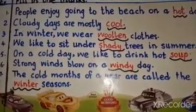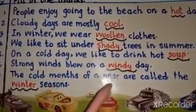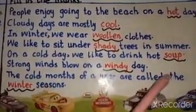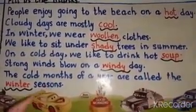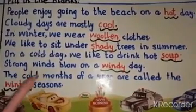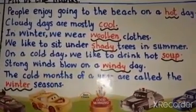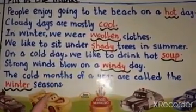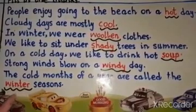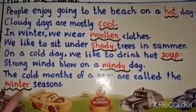Number 7: The cold months of the year are called the dash season. The cold months of the year are called the winter season. Write the spelling of winter: W-I-N-T-E-R.